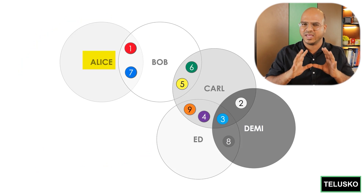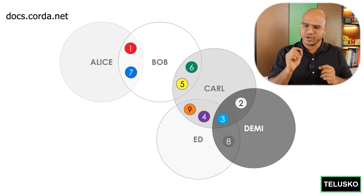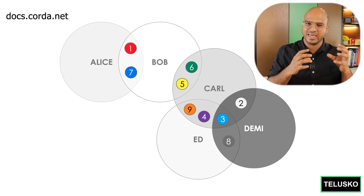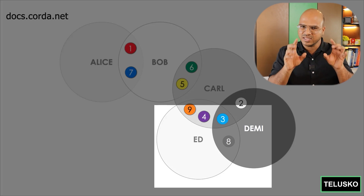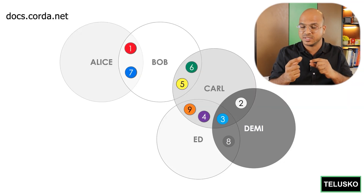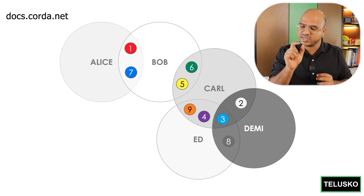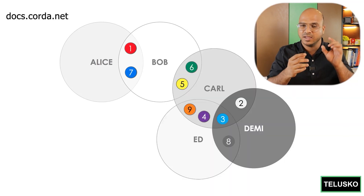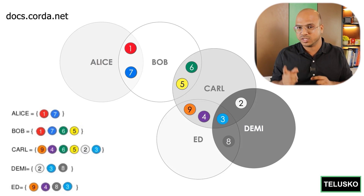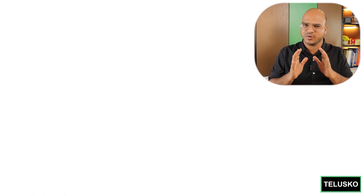Now look at this image. We have A, B, C, D, and E as part of this network. It's a Venn diagram where you have multiple nodes interacting. Multiple companies can do transactions together, and only that data will be stored with the individual nodes which they share with other nodes. If A is dealing with B, only they will have the data — not all the nodes. They will store this data in a ledger.